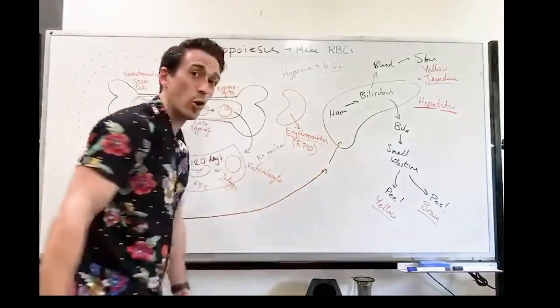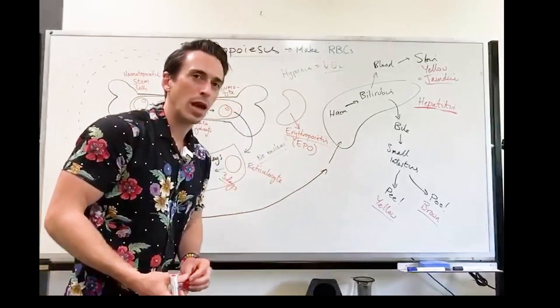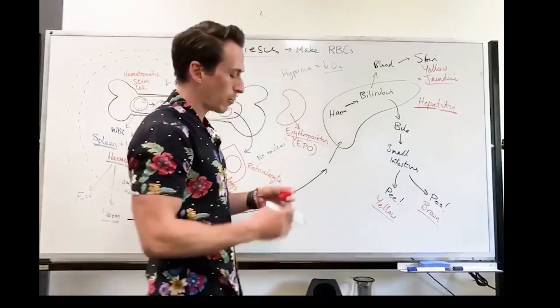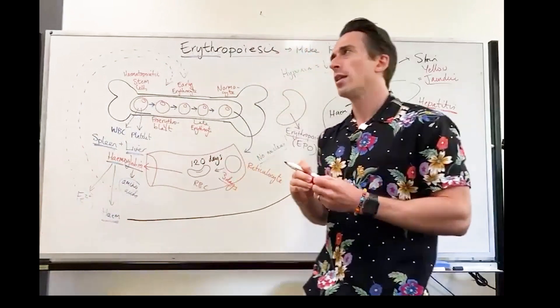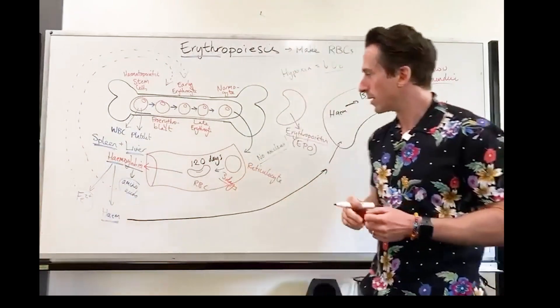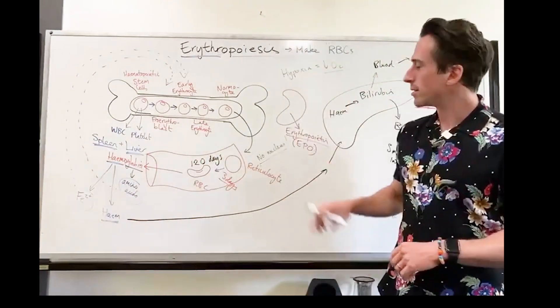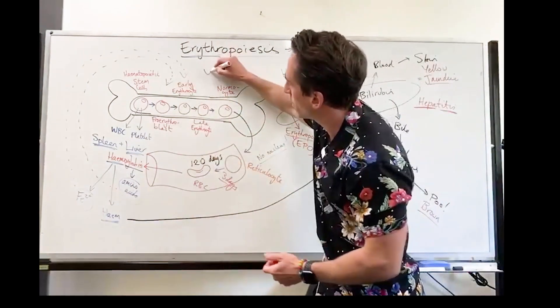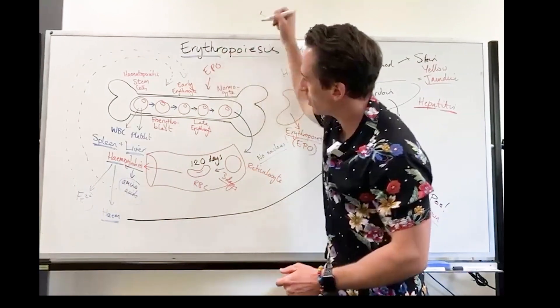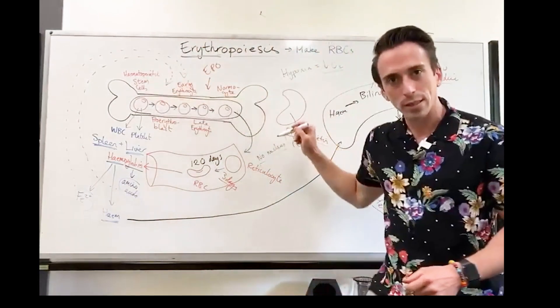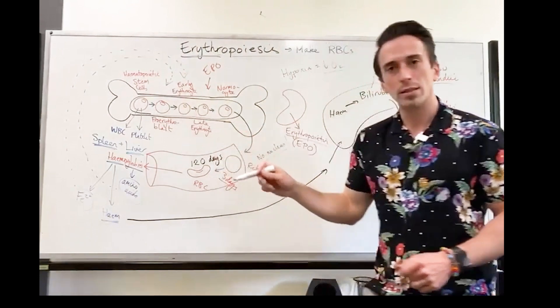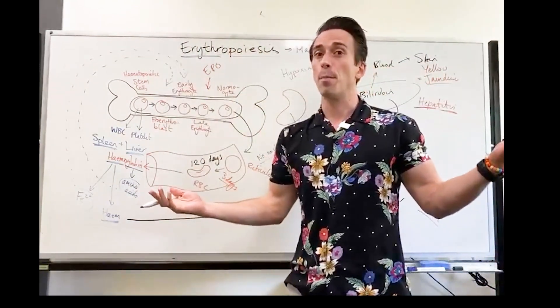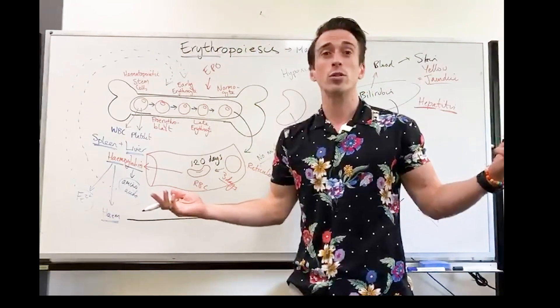Has anyone ever heard of EPO when people are taking performance enhancing drugs? EPO is a common performance enhancing drug. It's the one that I'm quite sure that Lance Armstrong admitted to taking because what it does is it produces red blood cells. So what EPO does is it stimulates this process. That's all it does. EPO stimulates erythropoiesis, makes more red blood cells, more oxygen, more energy, maybe mean the difference between winning or losing the Tour de France. EPO.